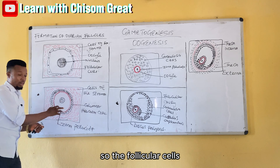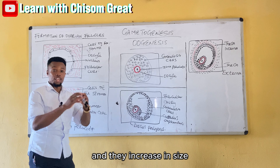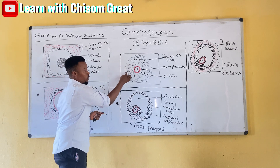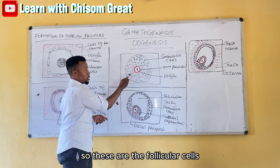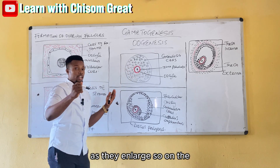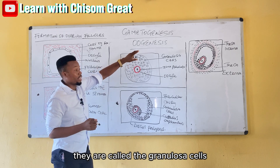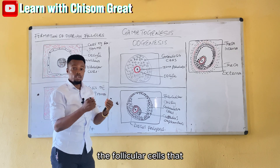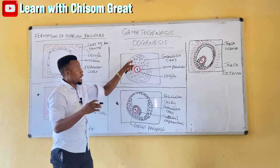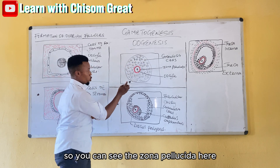The follicular cells then proliferate — they begin to enlarge, increase in size, and form several layers. At this stage they are called the granulosa cells, also known as the membrana granulosa.